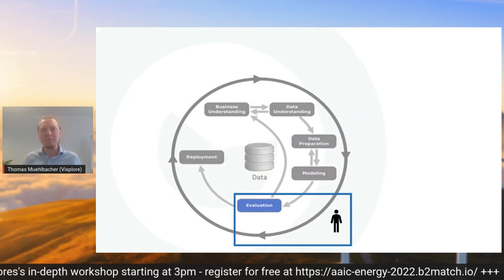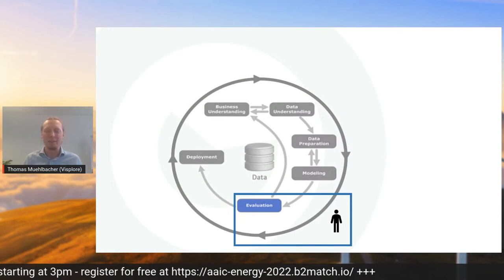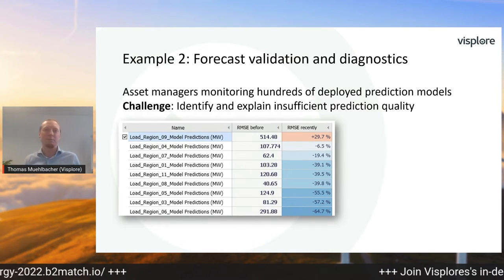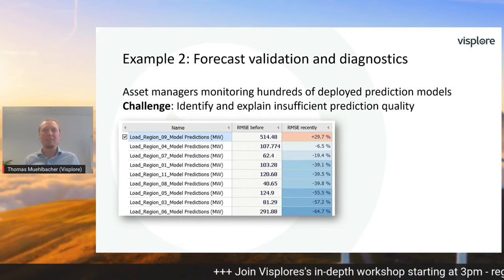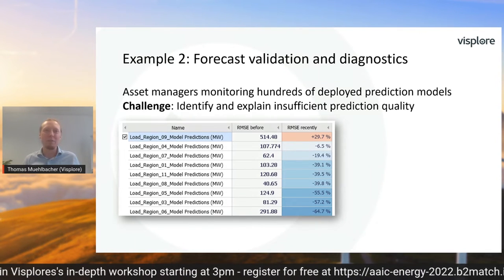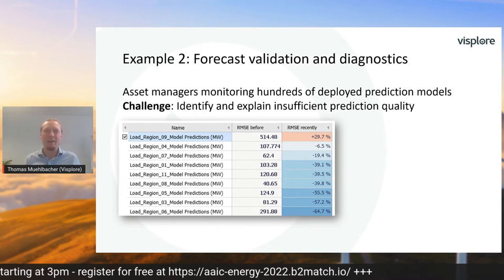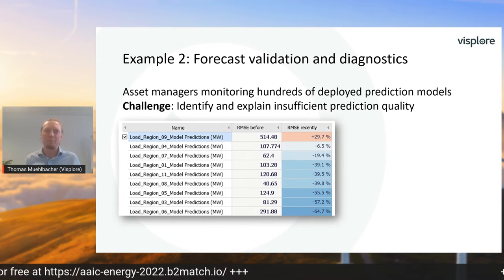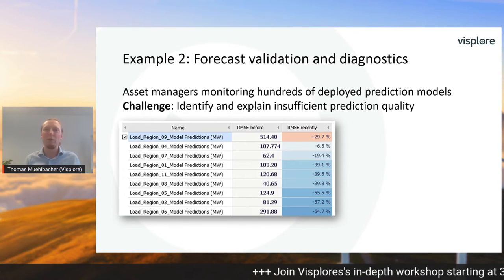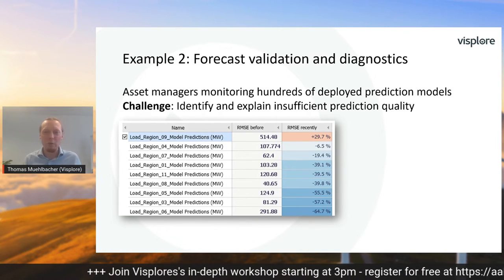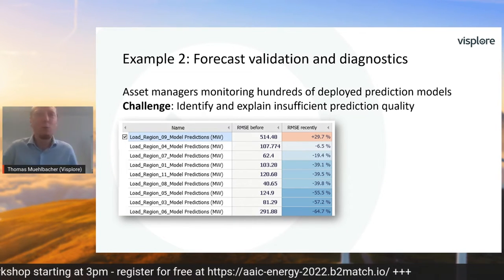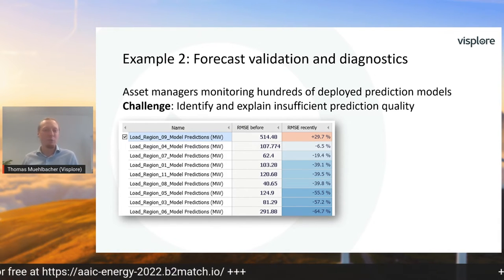Moving on to a second real-world example. This one involves humans in the evaluation phase of models, and it's about forecast validation and diagnostics. One big challenge for asset managers is the exploding number of prediction models they have to maintain. With decentralization, renewables, metering of customers, and the possibilities of AI, the number of models is growing and growing. The challenge is to validate all these models readily — sometimes models need to be recalibrated, for example if the consumer landscape has changed or other structural breaks. But from hundreds or even thousands of models, how can you quickly find out where action is needed and what action is needed to improve these models?